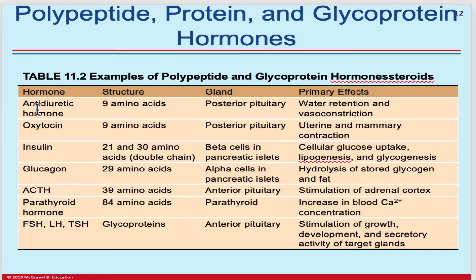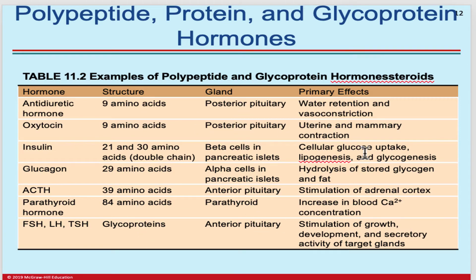In this slide we see a slightly bigger list of peptide, protein, and glycoprotein hormones. So now we have TSH, parathyroid hormone, ACTH, glucagon, and oxytocin, and you can see the structure, where each is made, and the effects it has. It's a good idea to learn this table in some form so that it stays with you long term.